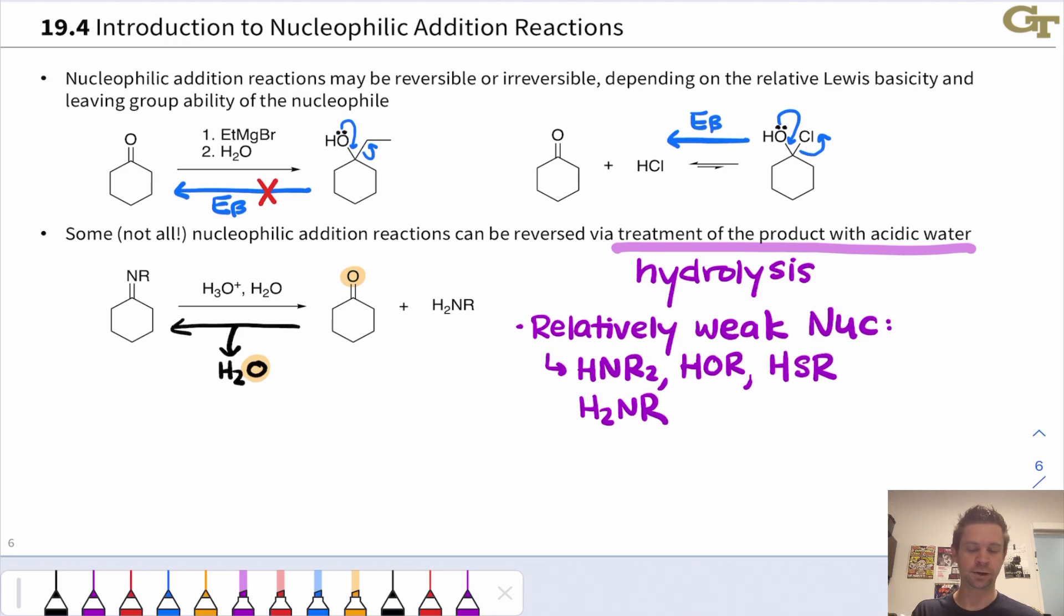For example, this addition of ethyl Grignard to kick off the ethyl anion is not a reasonable proposal, since we'd be going from negative charge on an oxygen atom in the alkoxide intermediate to negative charge on a carbon atom after that elimination. After the nucleophilic addition in the forward direction, there's no going back. This is an example of an irreversible nucleophilic addition reaction.